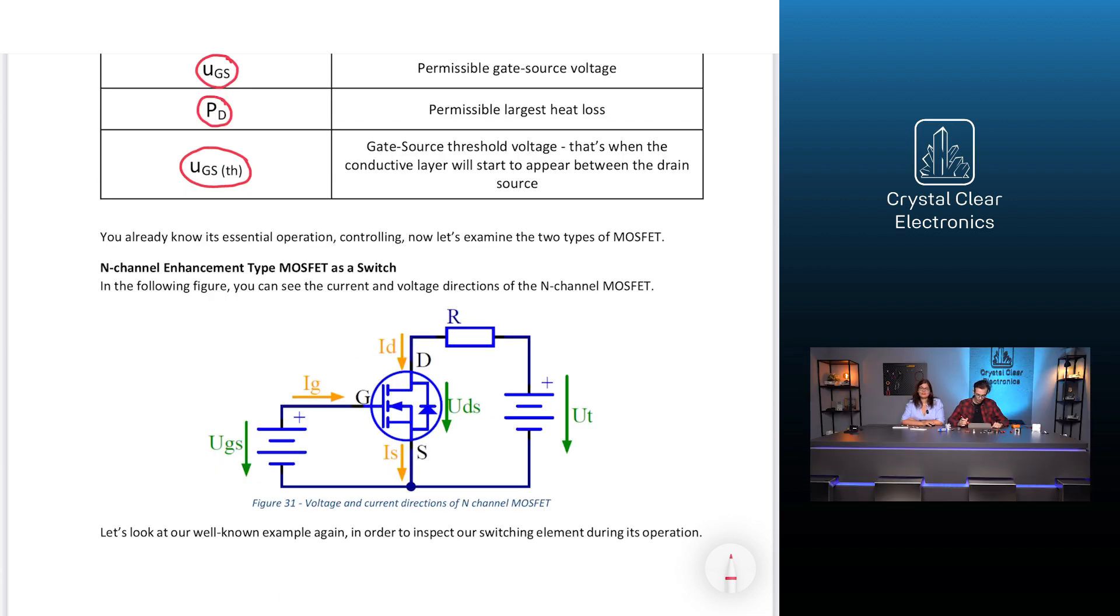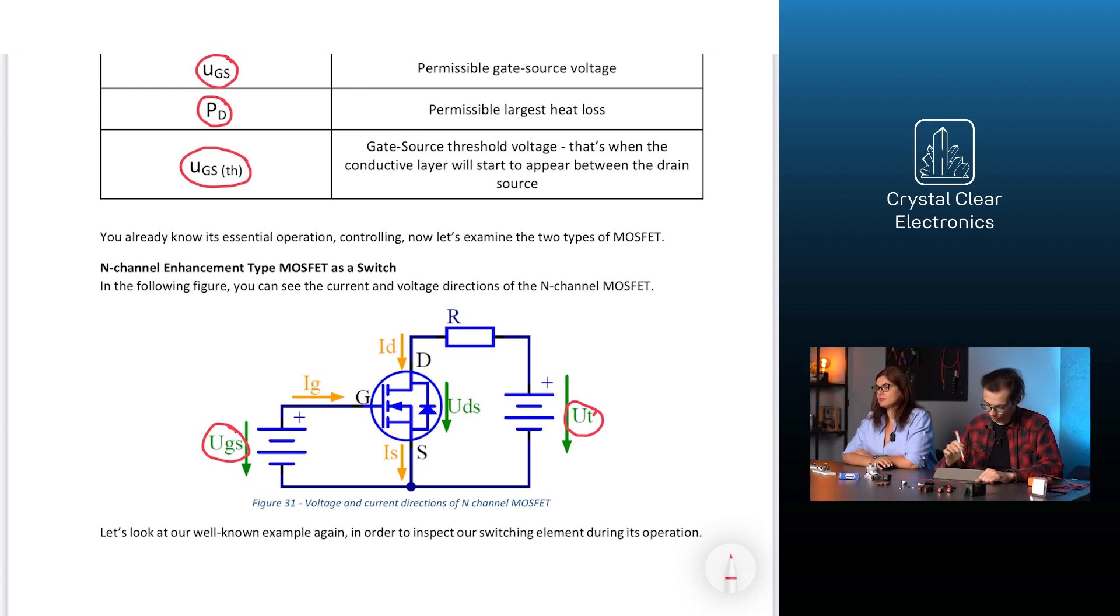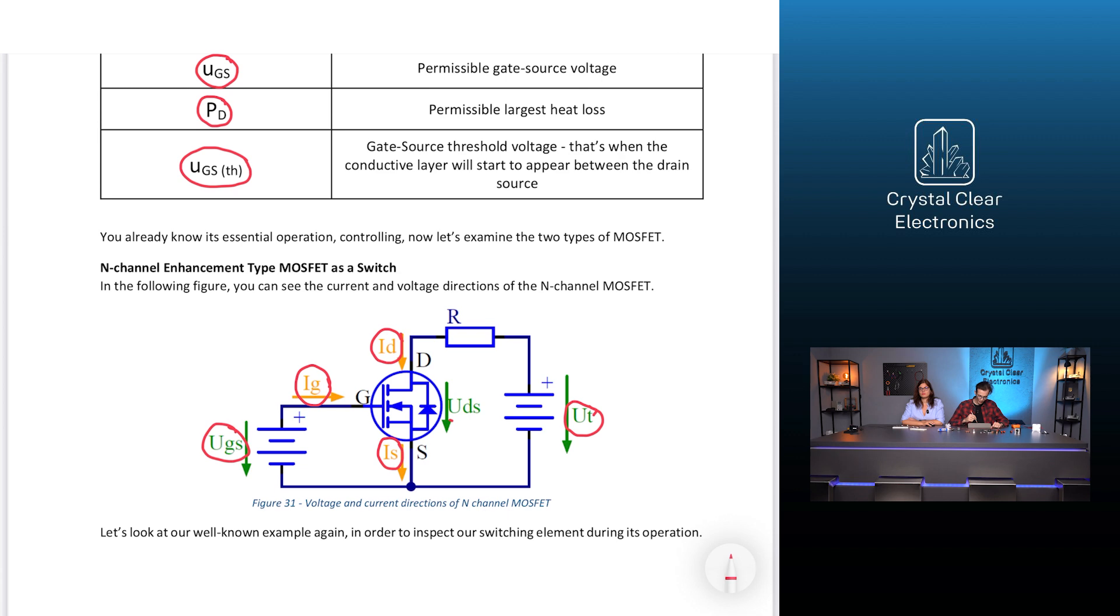In the following figure, you can see the current and voltage directions of the N-channel MOSFET. UT is used to denote the battery voltage and UGS is used to denote the gate source voltage. The current flowing towards the gate electrode is IG, the current flowing towards the drain electrode is ID, and the current flowing towards the source output is I-source. In addition, it's important to highlight the UDS or the drain source voltage.